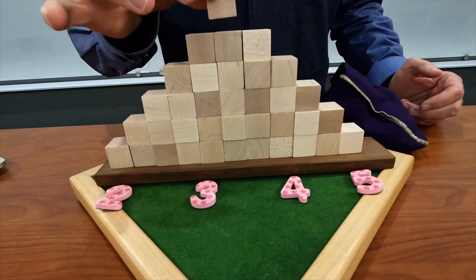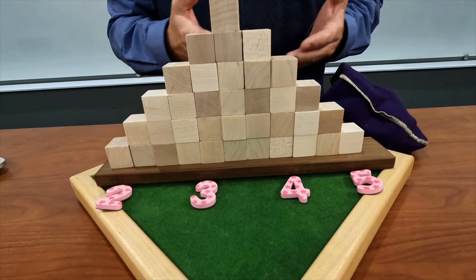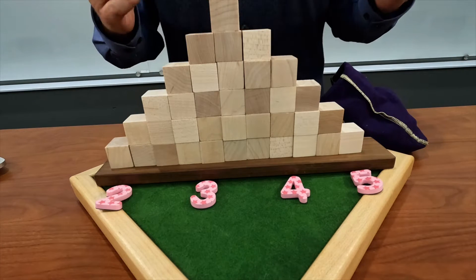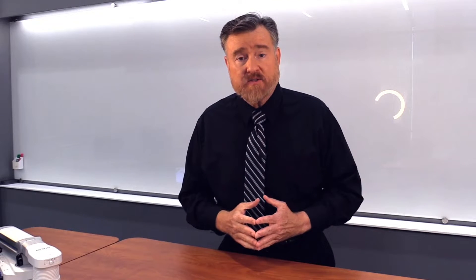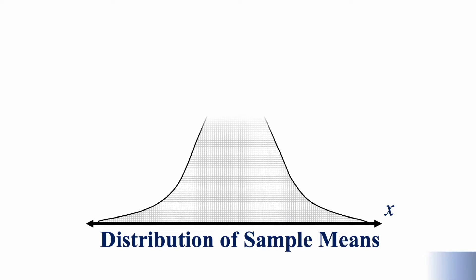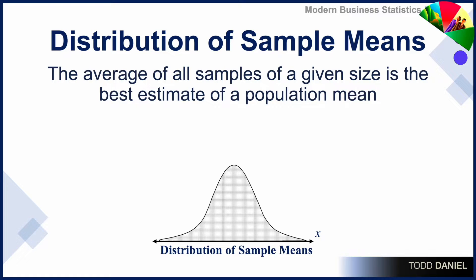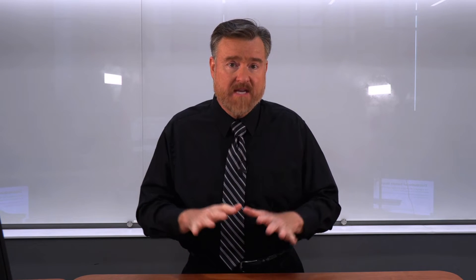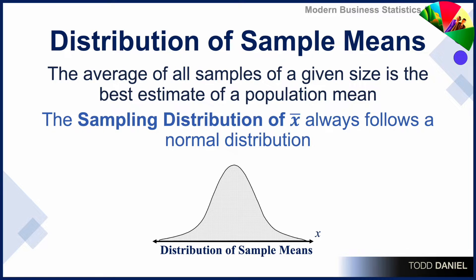From there, we used a wooden block to stand in for any given sample mean, and we placed those wooden blocks on a number line. When we were done stacking up wooden blocks — or sample means — on that number line, we had a distribution of sample means. The distribution of sample means is all samples of a given size that can be drawn from a population, and the average of all of those samples is our best point estimator for a population mean. We also discovered that despite any characteristics of the underlying population, the distribution of sample means is always a normal curve.